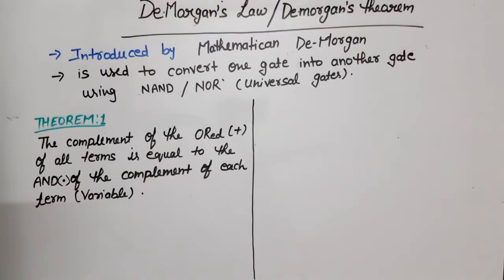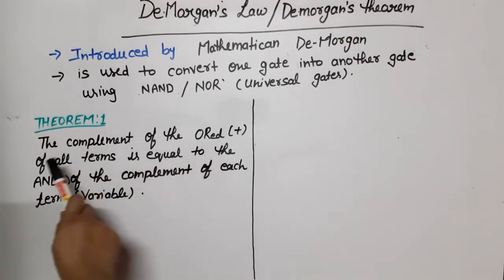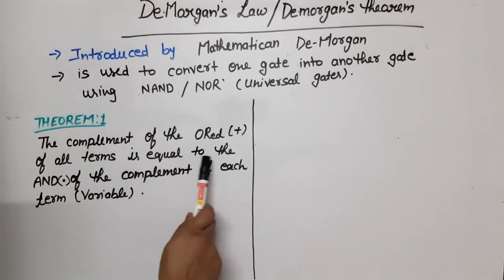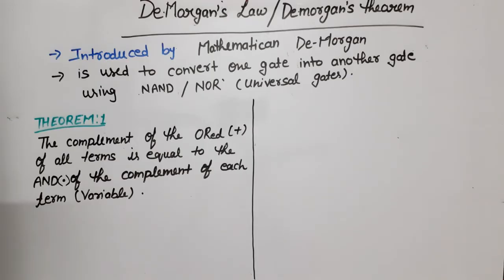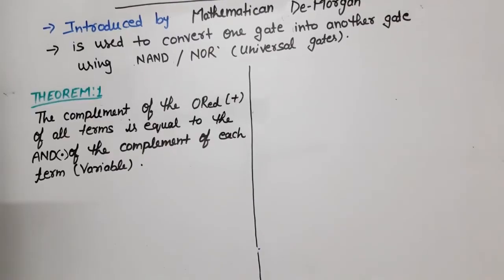We will explain the theorems one by one. According to Theorem 1, the complement of the OR of all terms is equal to the AND of the complement of each term or variable. 'Term' means a variable, and 'OR operation' means plus. Please remember this plus is not a sum — this is the logical sum or OR operation, and this is the AND operation, or you can call it the product operation.